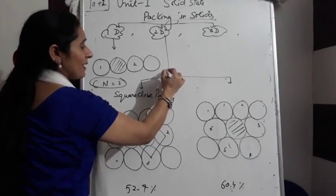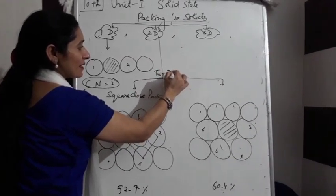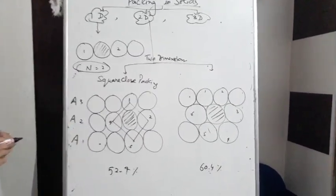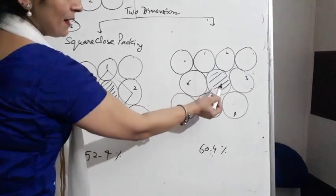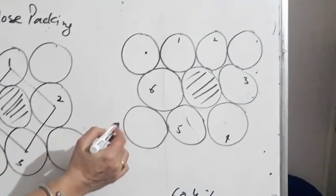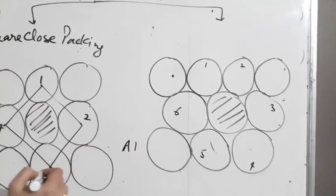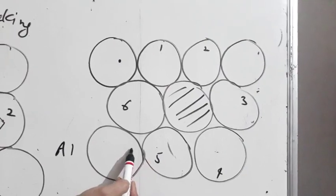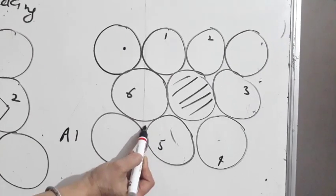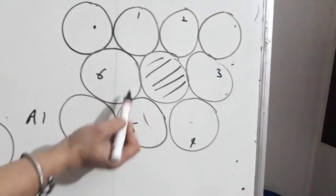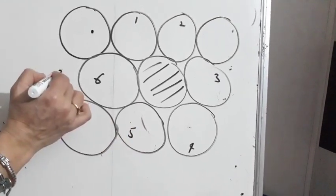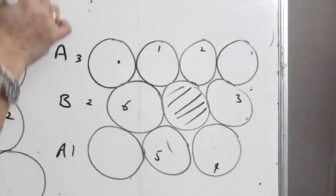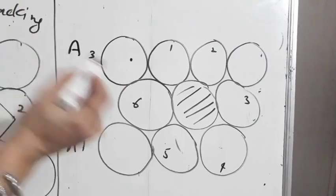Square close packing is in two dimensions. Now, the other way of packing is not placing spheres directly on top, but fitting them into the depressions of the layer below. This is called close packing. The first layer is A, the second layer is B, and the third layer follows.